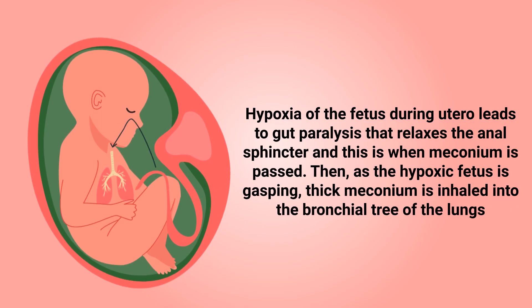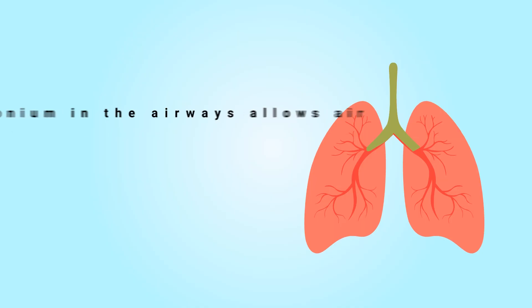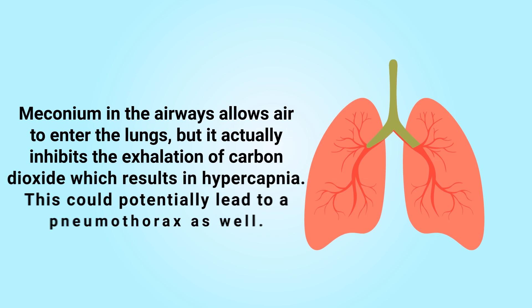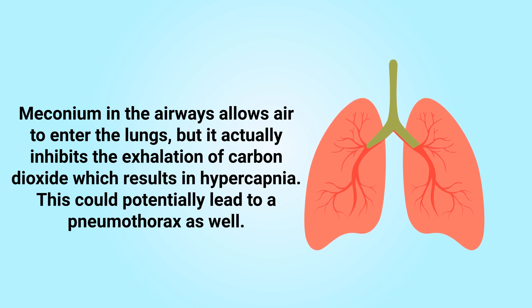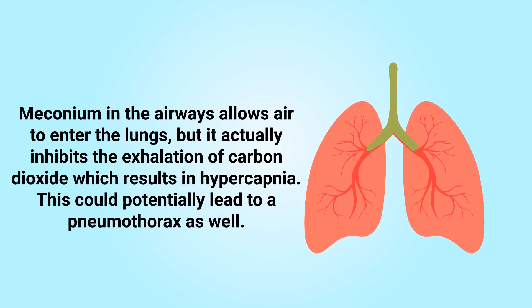Hypoxia of the fetus in utero leads to gut paralysis that relaxes the anal sphincter, and this is when meconium is passed. Then, as the hypoxic fetus is gasping, the meconium is inhaled into the bronchial tree of the lungs.